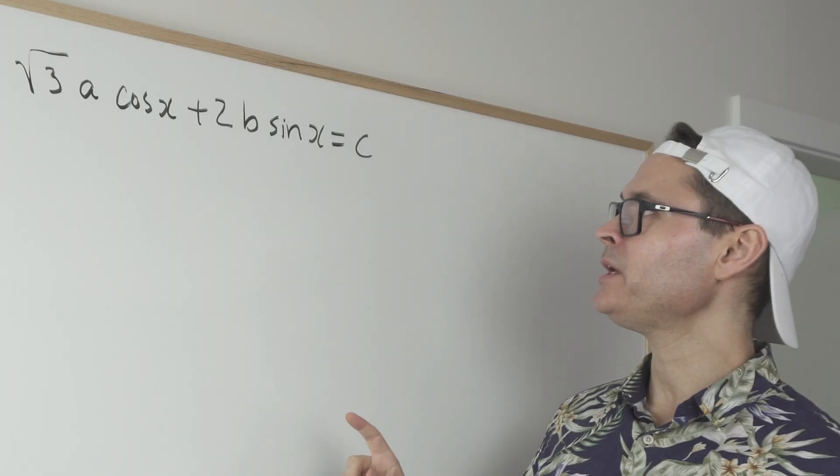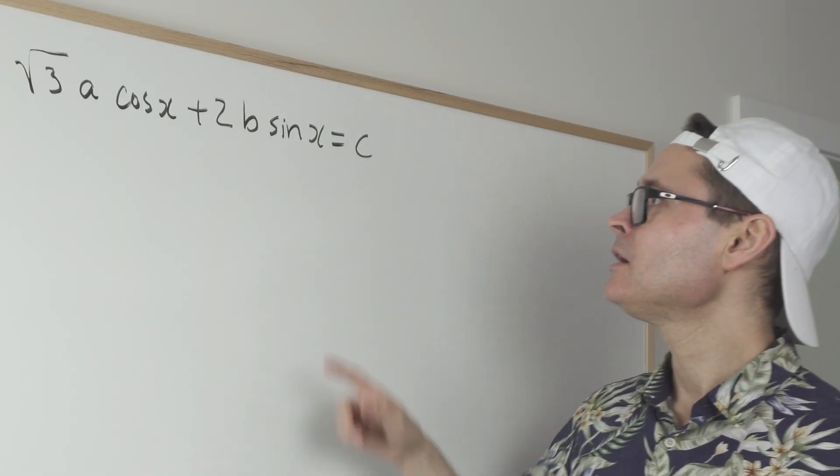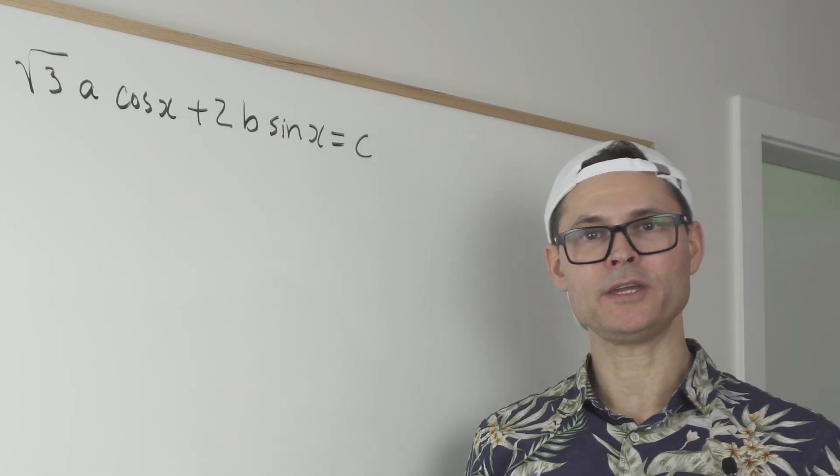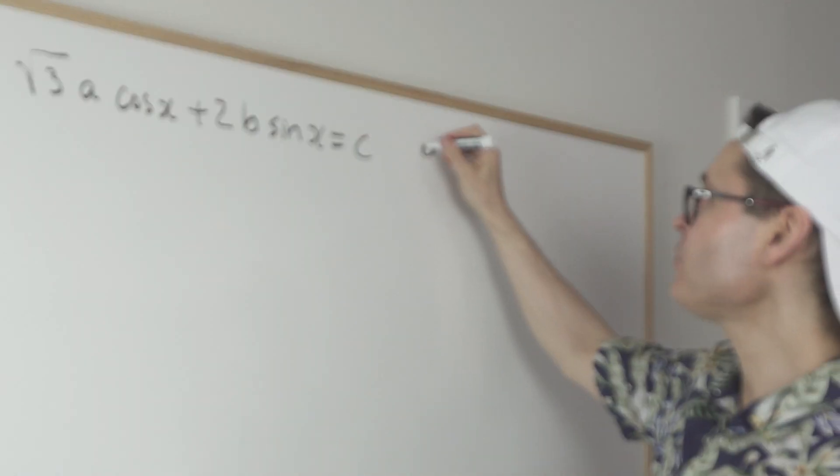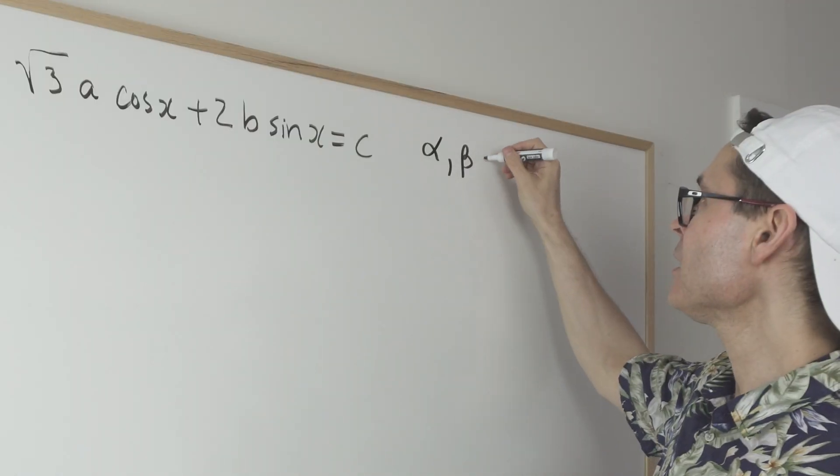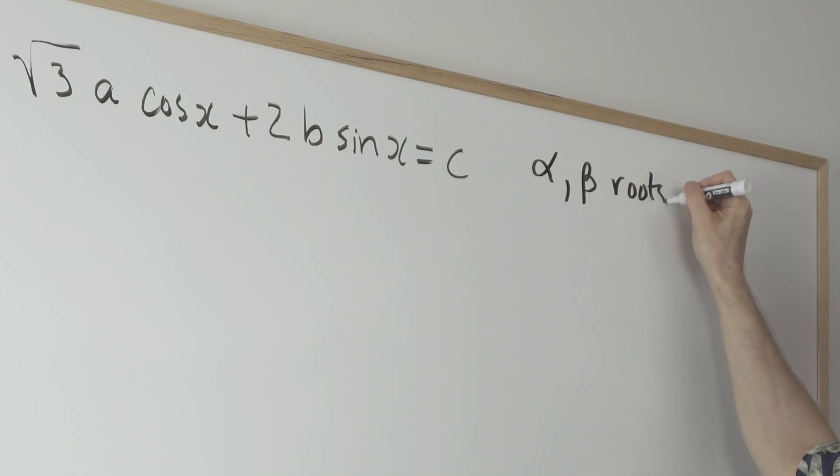The other thing that we know, we're told, is that there are two roots to this equation. So they tell us that alpha and beta are roots. And not only that, but they also tell us that the sum of alpha and beta is equal to π over 3.